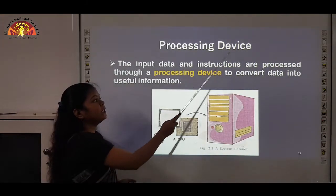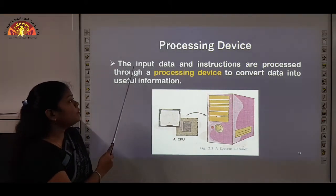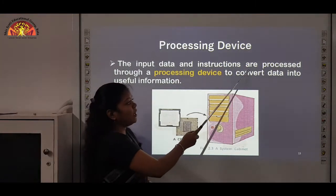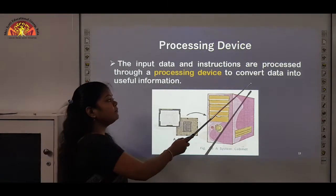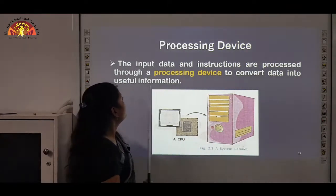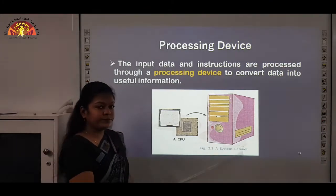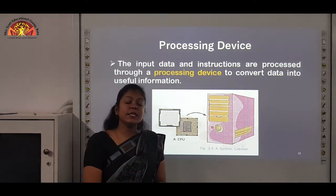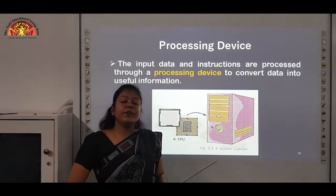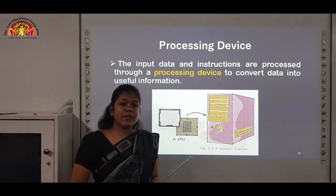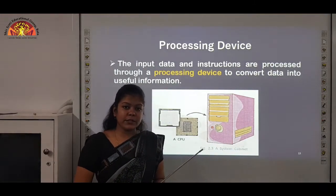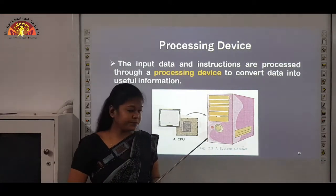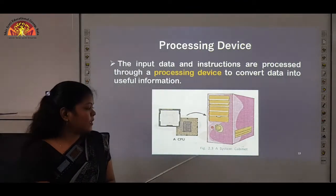Next we have the processing device. The input data and instructions are processed through the processing device to convert data into useful information. As in our previous example, we took 2, 6, and the plus symbol as input — the computer processed it and gave output as 8. This processing is done through the CPU.